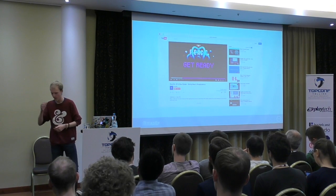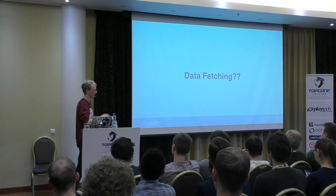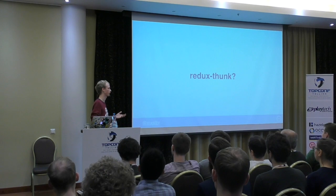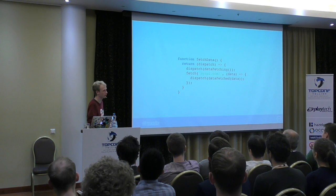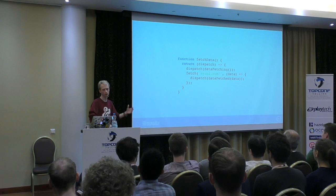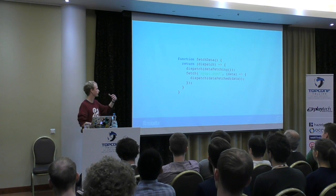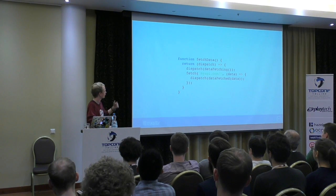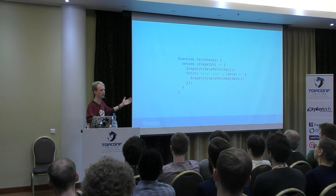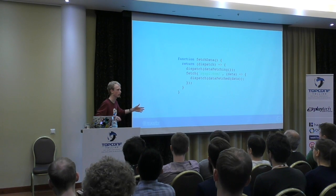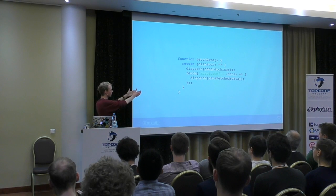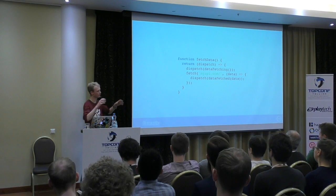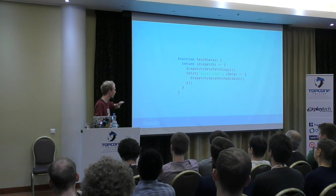One thing that struck me as weird is data fetching. In the Redux world, most people currently use Redux Thunk — you dispatch an action which is a thunk, a function that returns another function where the Redux middleware injects dispatch so you can do asynchronous stuff. The problem is it's really hard to test. Somewhere in the middle of your actions you have a huge blob of asynchronous code — you'd have to mock fetch, mock dispatch, it's horrible.